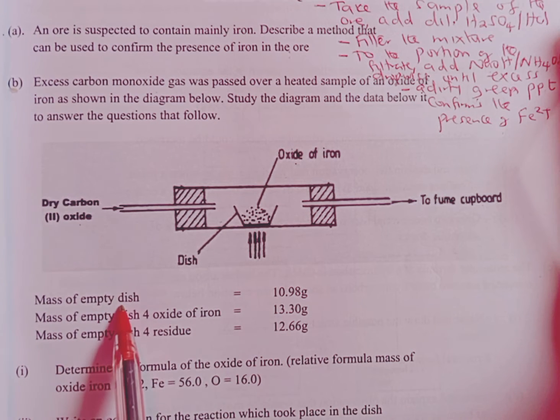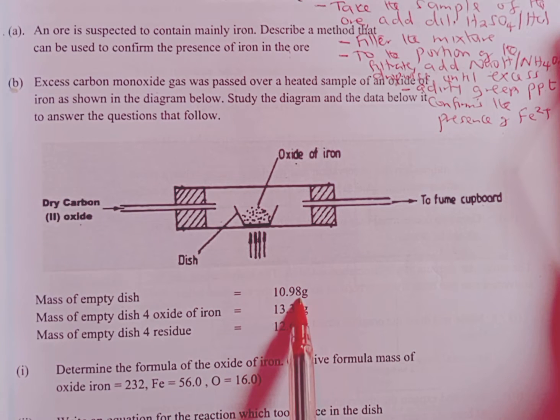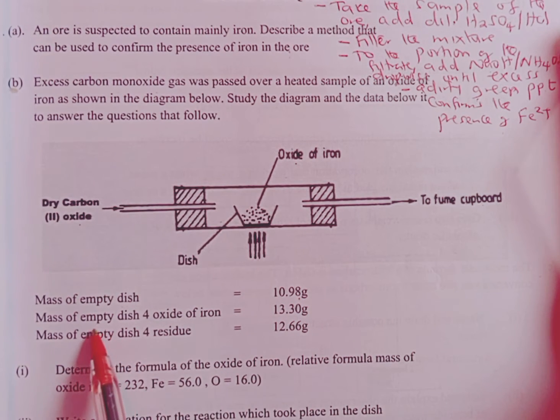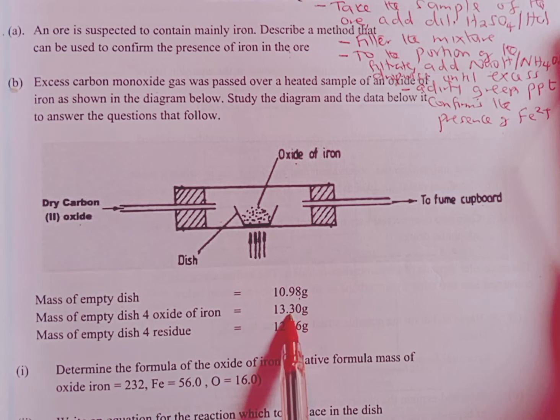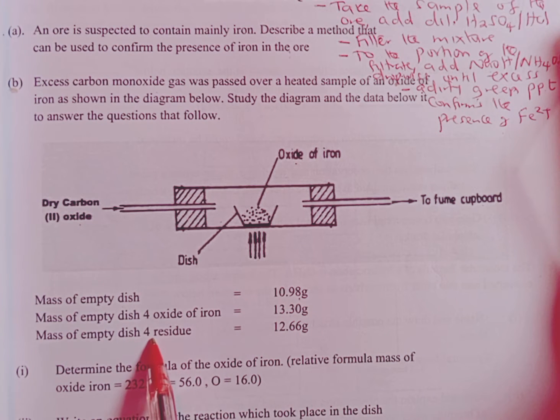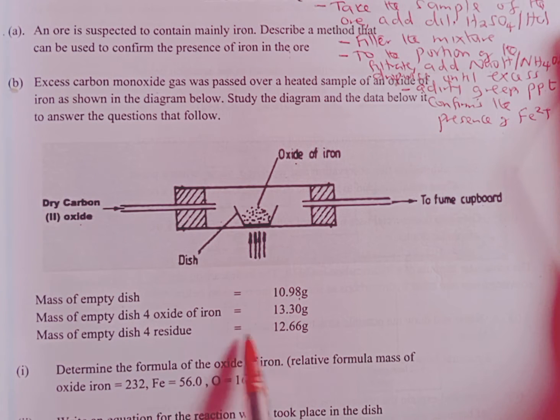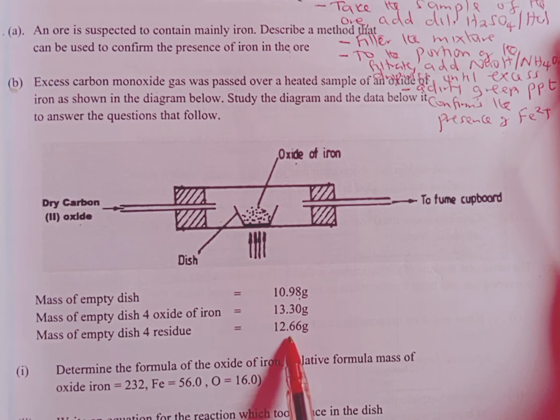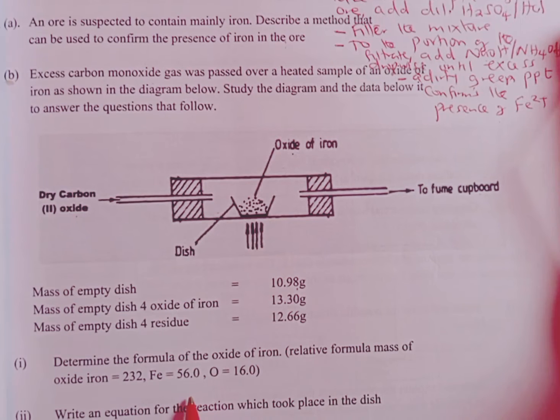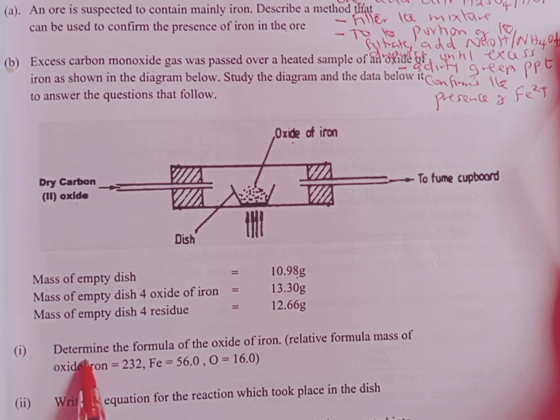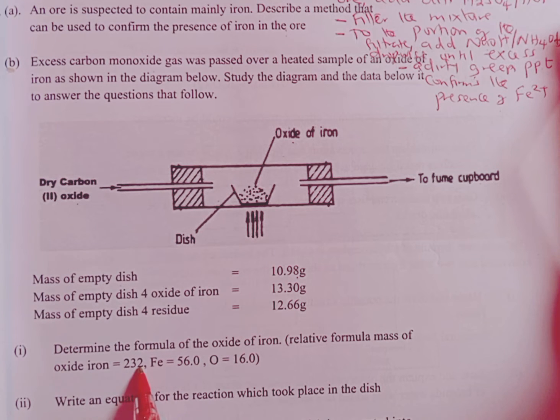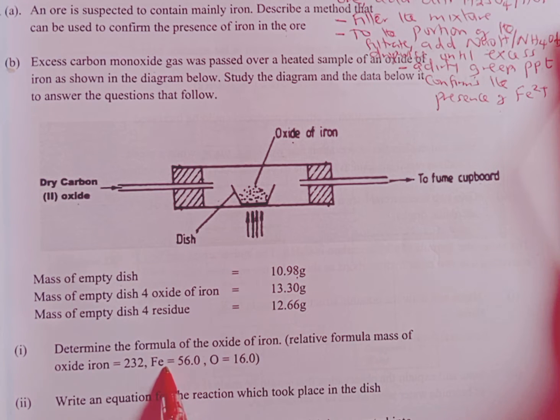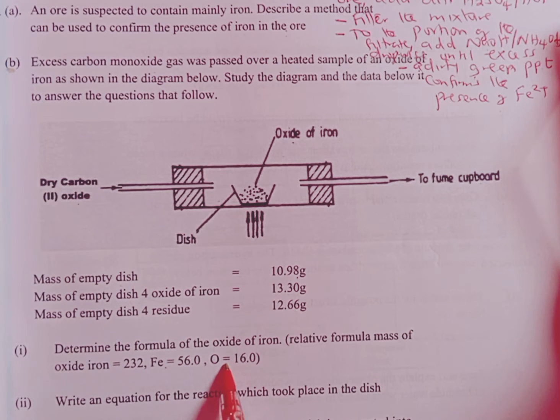From that experiment, we have been given the sample of the results. We have the mass of an empty dish weighing 10.98 grams. We also have the mass of the empty dish plus the oxide of iron weighing 13.30 grams. Then the mass of the empty dish plus the residue weighing 12.66 grams. The first part of the question now requires us to determine the formula of the oxide of iron. We have been given the relative formula mass of the oxide which is 232, the relative atomic mass of iron as 56.0 and that of oxygen as 16.0.